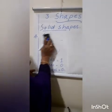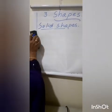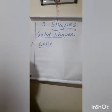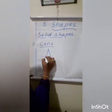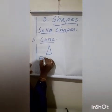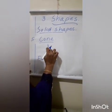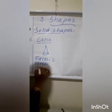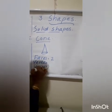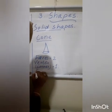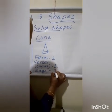And finally, cone. Cone has how many faces? Two — this one and another one. And vertex, or corner — only one corner. And edge — one edge.